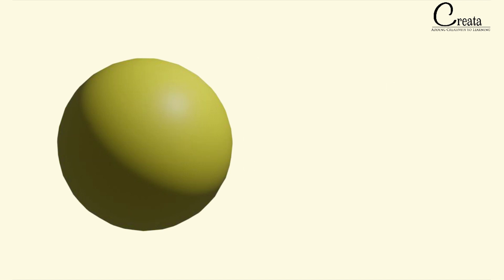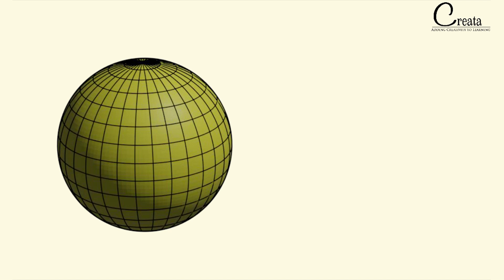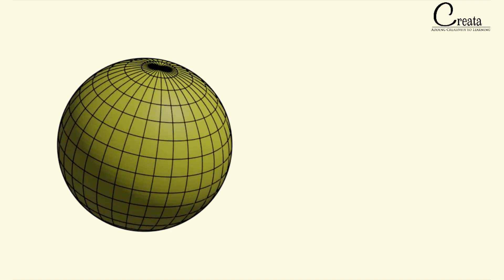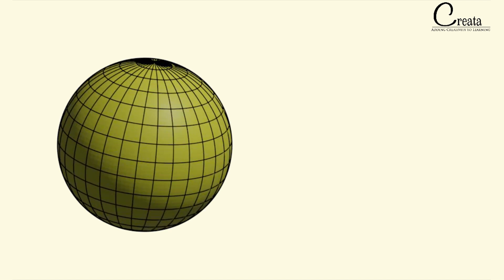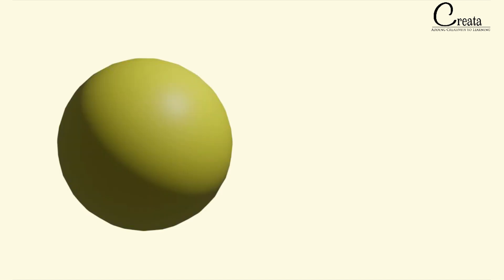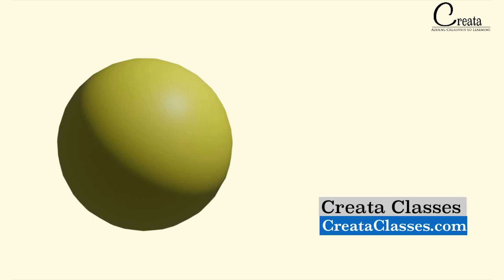Let's see what are the surface components of the sphere. On observing, we find that the sphere has only one surface component, that is the curved surface. The sphere does not have any flat surface. So the sphere has only one dimension — that is the radius — and only one surface component — that is the curved surface.